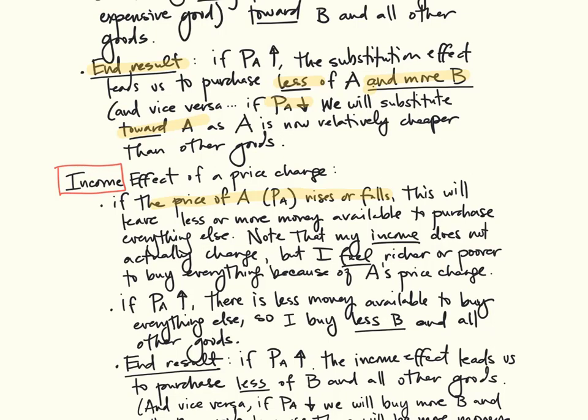Generally speaking, it's not that our income actually changes, but the amount of disposable income left over after purchasing A will have changed. So that if A rises in price, there's less money available to buy everything else. So I buy less B, C, D, and everything else.